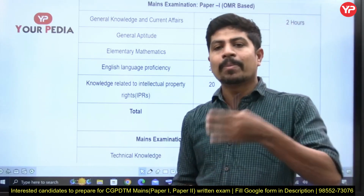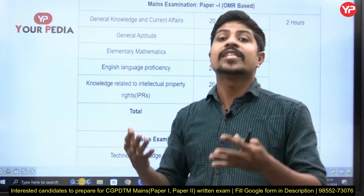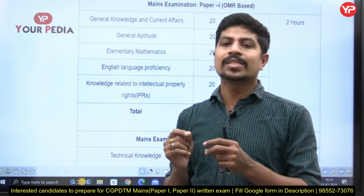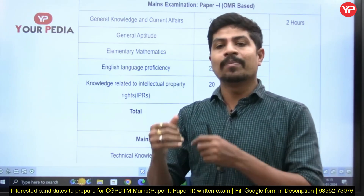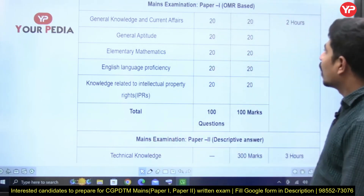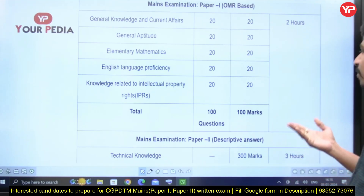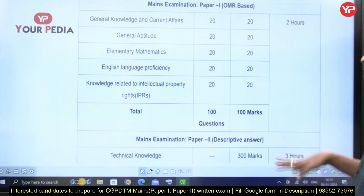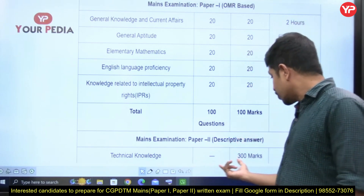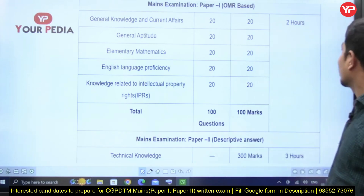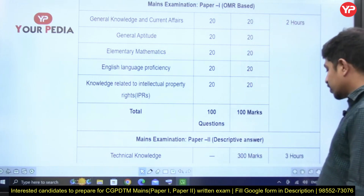Mains is going to have two papers: Paper 1 and Paper 2. Paper 1 is objective OMR-based, and Paper 2 is descriptive — the technical paper. Paper 1 is non-technical and Paper 2 is technical. In Paper 1 we have general knowledge and current affairs, general aptitude, elementary mathematics, English language proficiency, and knowledge related to intellectual property (IPR). Paper 2, the descriptive technical paper, is of 300 marks for three hours. Paper 1, the objective paper, is of two hours.